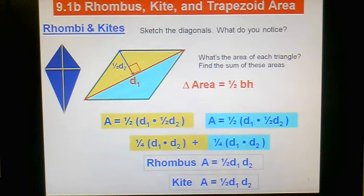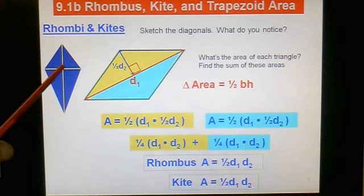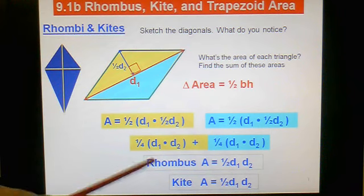And that formula also works for a kite. And why does it work for both of them? Well, it goes back to the diagonals. Because the diagonals are perpendicular and they're made up of these right triangles, either of these formulas works.